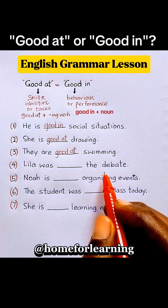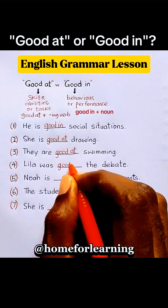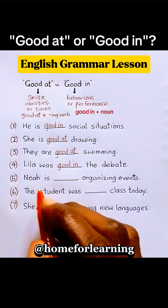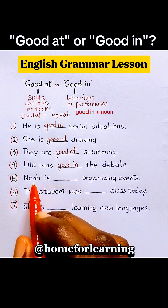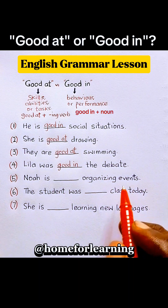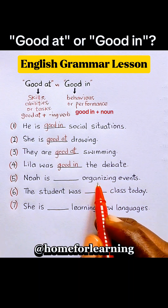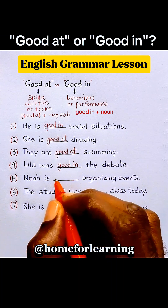Because 'good in' goes with behavior or performance, Lila was good in the debate. Noah is blank organizing events — we have the gerund, the ing verb 'organizing,' and this is an ability. Therefore our answer is 'good at,' because 'good at' is used with skills, abilities, or tasks.